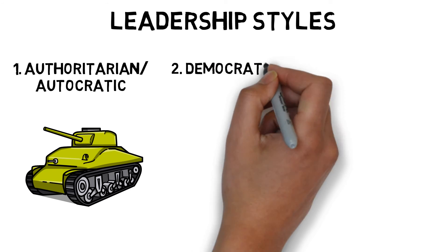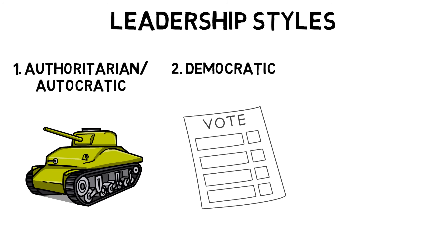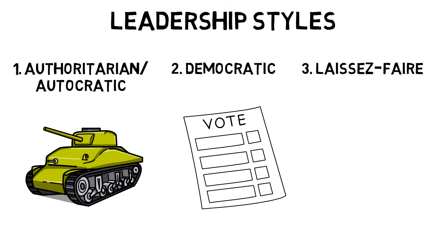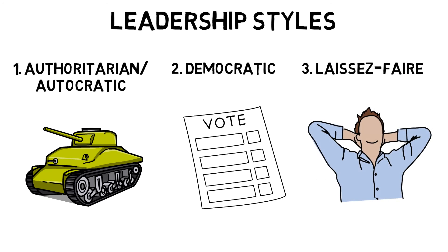Democratic leaders listen to the advice of others and encourage group discussions. This is an informal and relaxed approach; when the leader is absent, the group will continue to work. These types of leaders are most effective in individual sports and when the performer is experienced and when decisions do not have to be made quickly. A laissez-faire leader adopts a passive role and leads the group to look after themselves; members of the group may become aggressive towards each other when things go wrong.